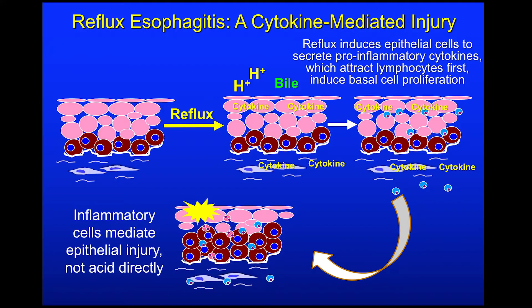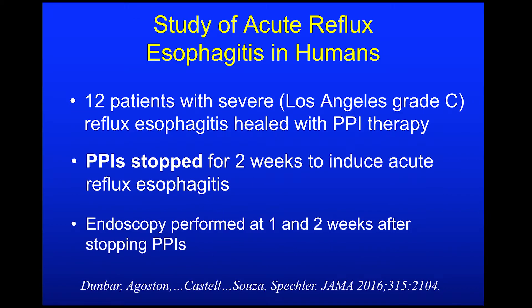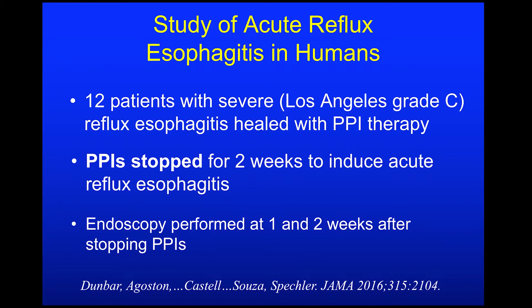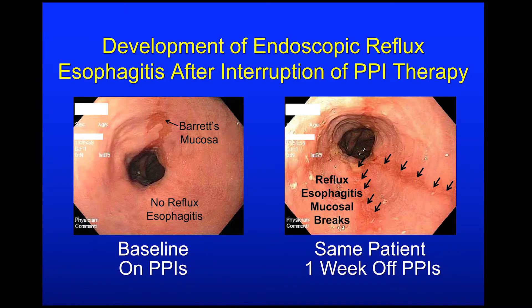We recently reported a study that supports this model in human reflux esophagitis. We studied 12 GERD patients who had severe Los Angeles Grade C reflux esophagitis that had been healed with PPI therapy. We then stopped their PPIs for two weeks to induce acute reflux esophagitis, and we performed endoscopy with esophageal biopsy at one and two weeks after stopping the PPIs. All 12 patients redeveloped reflux esophagitis with mucosal breaks. Just as in our rat model, this acute reflux esophagitis in humans was characterized by epithelial infiltration with T lymphocytes, not granulocytes, and basal cell hyperplasia preceded surface cell erosion. We were very excited that these findings supported our new concept of reflux esophagitis as a cytokine-mediated injury, and we wanted to elucidate the molecular events underlying this process.